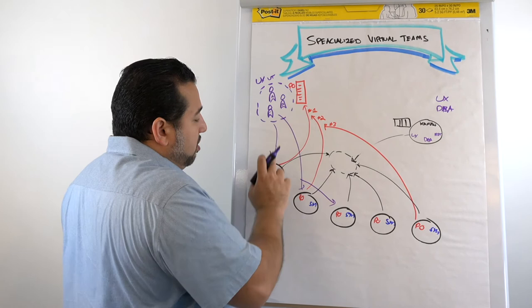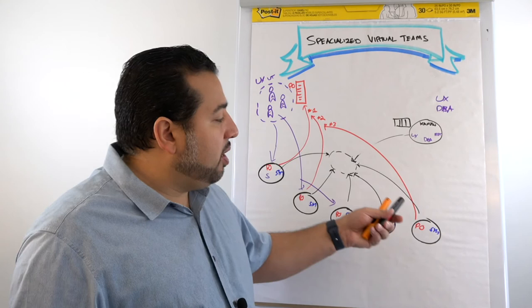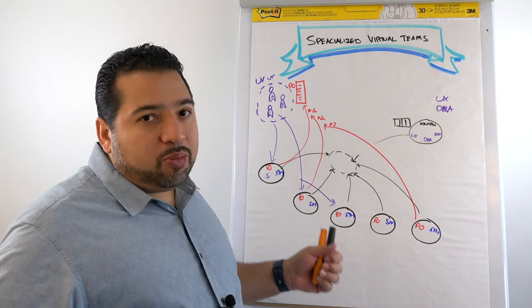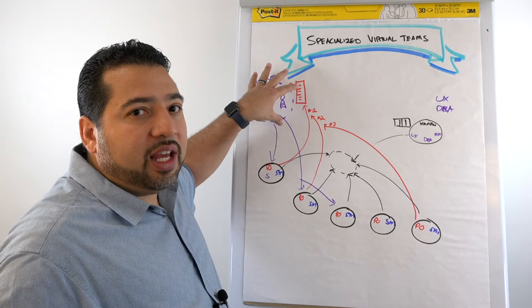And so you're deploying the specialties to those scrum teams as needed on a sprint by sprint basis. That's why it's a virtual team in the sense that they never actually work physically together. They work on, they're always in a scrum team working with a scrum team.